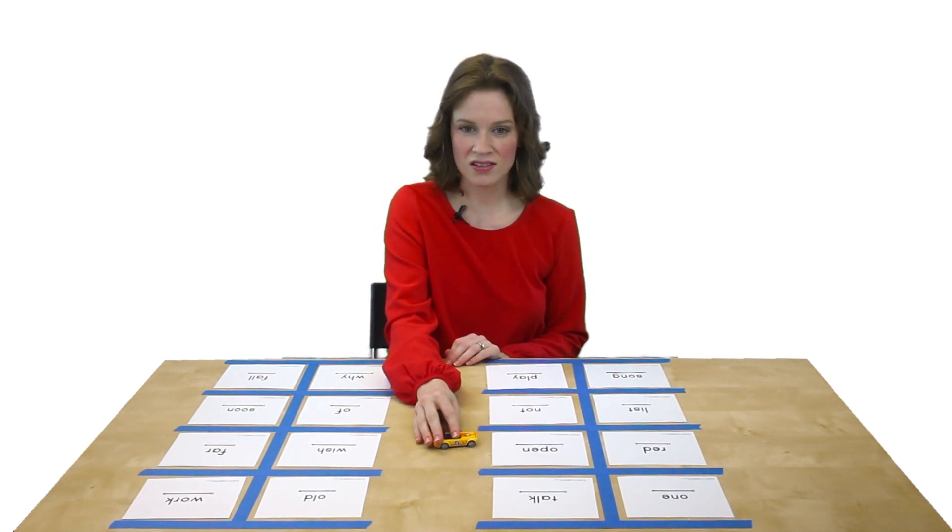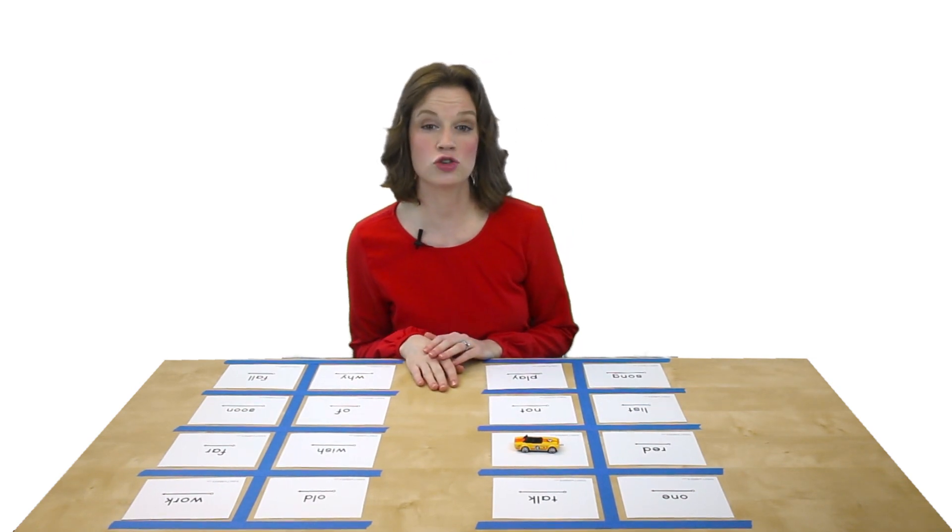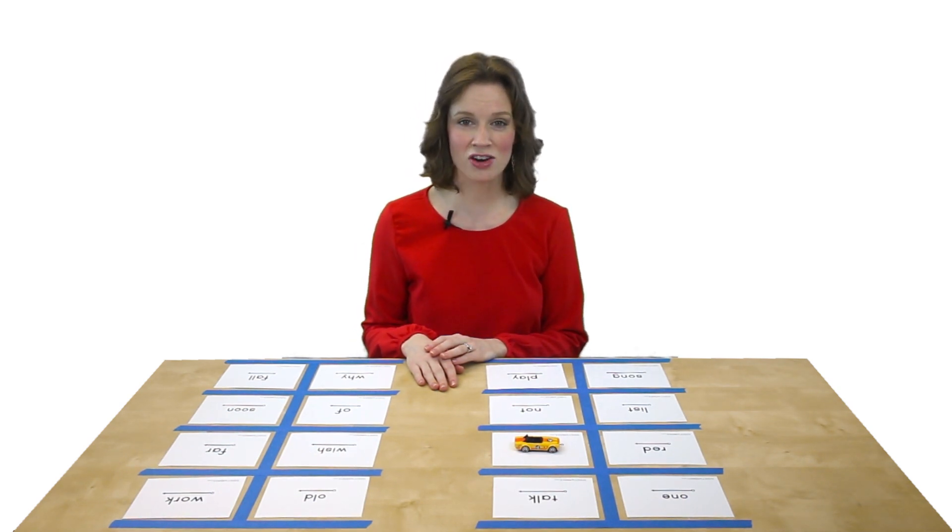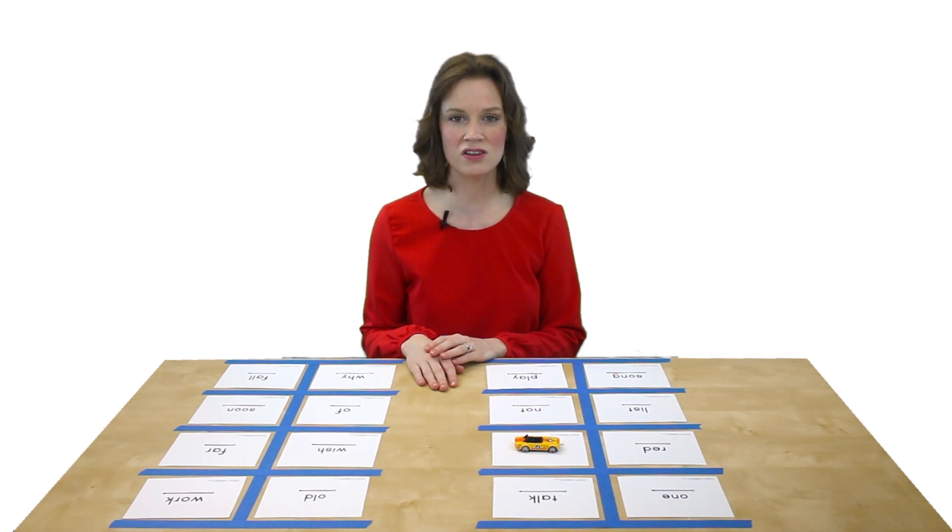If they say it correctly, then they can park the car on top of the card. If they can't find the right card, or if they drive to the wrong card, go through our standard corrections procedure to review the word. Call out another word, and then another, until the child has successfully found and parked on all the words multiple times.